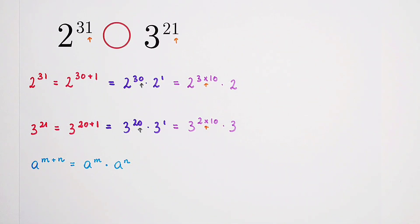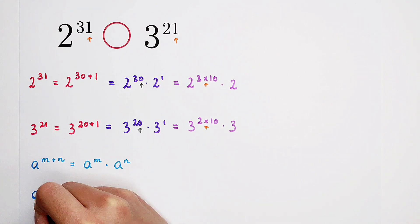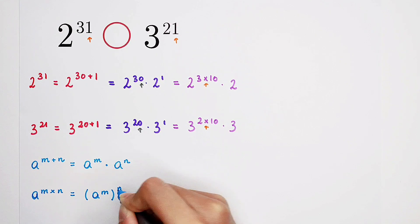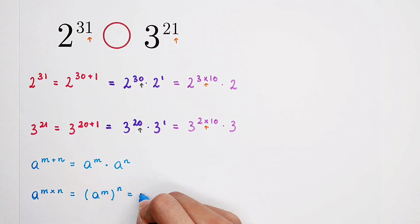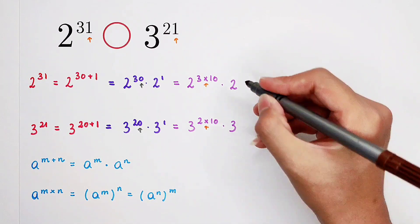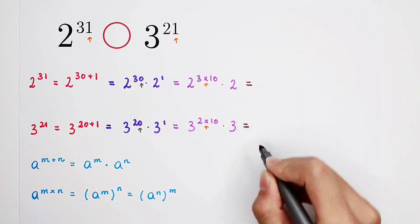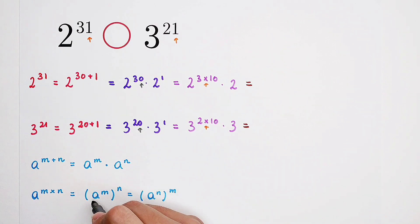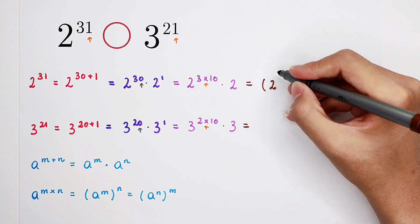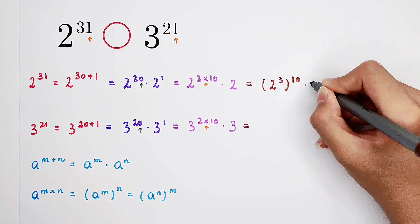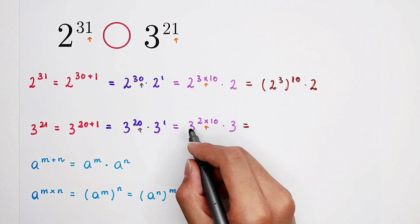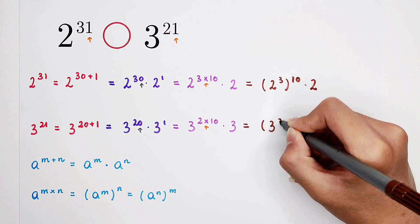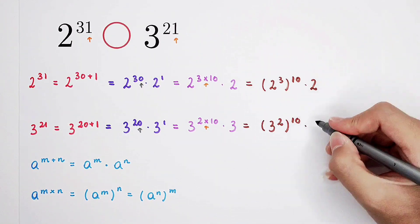We have multiplication in the exponents, so I'll use another formula: A to the power of M times N equals A to the power of M, to the power of N. Substituting: 2 to the power of 3 times 10 becomes 2 to the power of 3, to the power of 10 — and then times 2. Similarly for the other term, times 3.